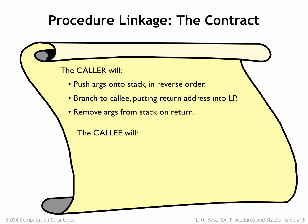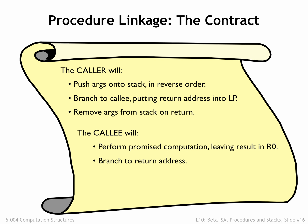The called procedure will perform the promised computation, leaving the result in R0. Jump to the return address when the computation has finished. Remove any items it has placed on the stack, leaving the stack as it was when the procedure was entered. Note that the arguments were pushed onto the stack by the caller, so it will be up to the caller to remove them.